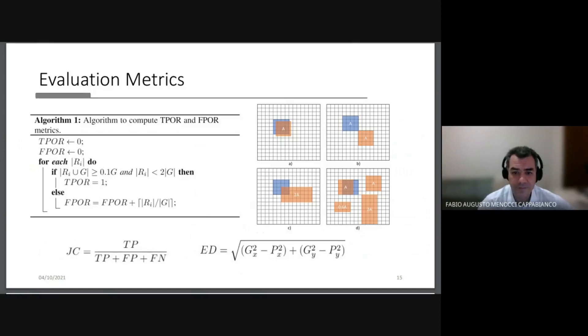The second measurement is FPOR and is a quantitative measurement that provides the approximate quantity of false positive patches. Again, large patches may count as multiple false positives in this metric depending on their relative size to the patch size.